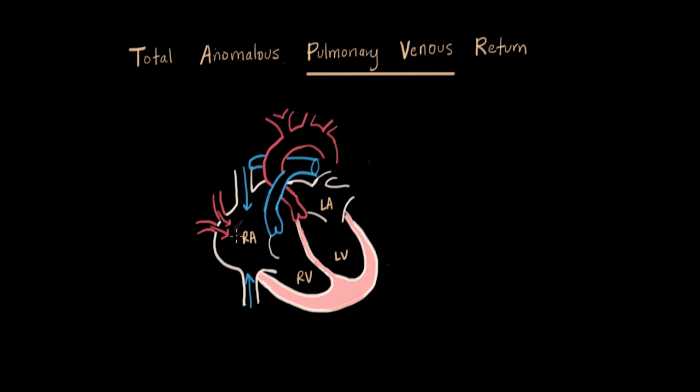This purplish kind of blood is floating around in our right atrium. And from there, the rest of the circuit is the same. It goes to the right ventricle. It goes to the lungs.